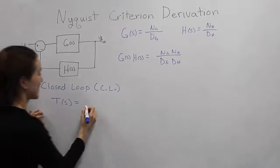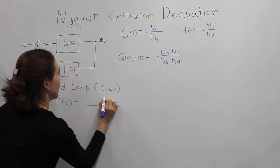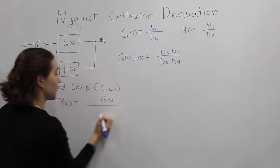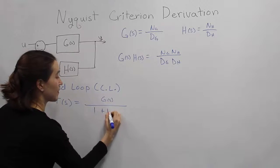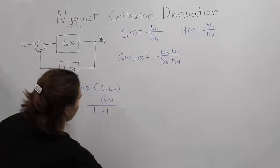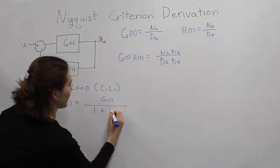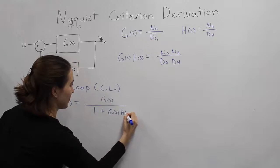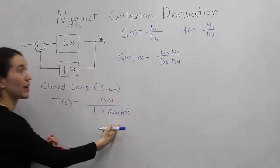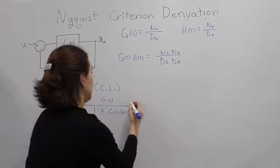If you remember from previous lessons, it would be G of s divided by 1 plus H of s, or G of H, doesn't matter if I multiply, G of s times H of s. Let's now rewrite this in our new notation here.